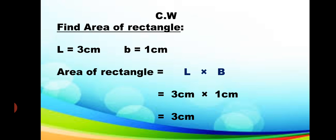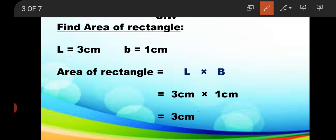By putting the values into the formula, we will get our answer — the area of the rectangle. So let's start: length is 3 cm, multiplied by breadth which is 1 cm. 3 cm multiplied by 1 cm gives us 3 cm squared. You all know the unit of area is squared, so the answer is 3 cm squared.